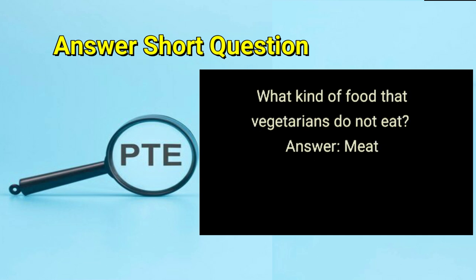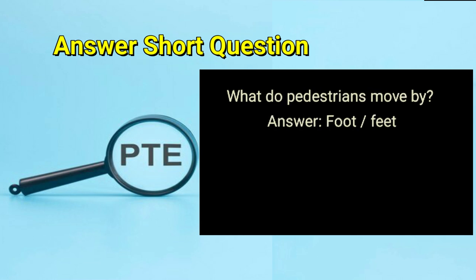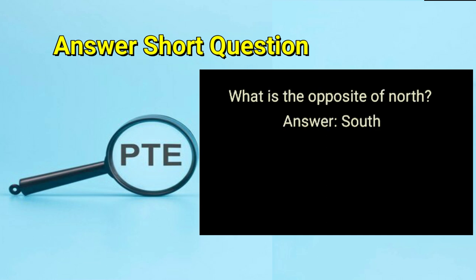What kind of food do vegetarians not eat? Answer: meat. What do pedestrians move by? Answer: foot or feet. What is the opposite of north? Answer: south.